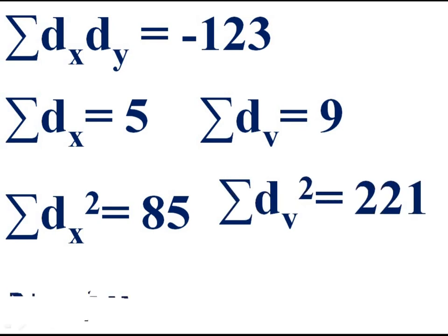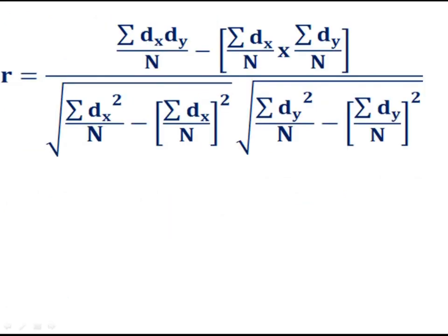Now apply the formula for the shortcut assumed mean method. Correlation r equals: [sigma dx·dy / n  minus  (sigma dx / n)(sigma dy / n)] divided by square root of [sigma dx² / n minus (sigma dx / n)²] into square root of [sigma dy² / n minus (sigma dy / n)²].